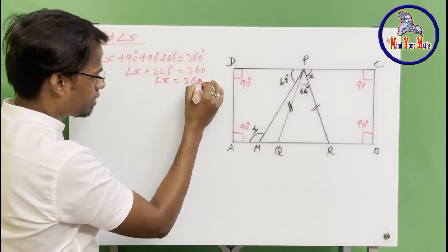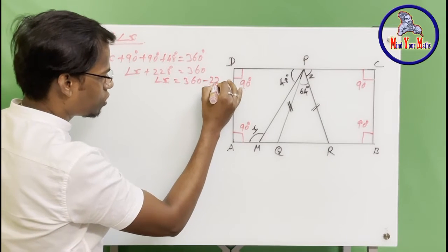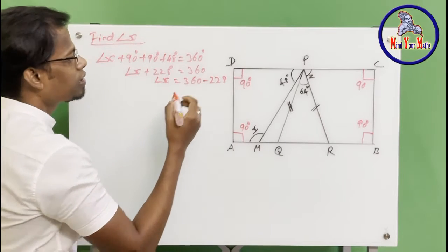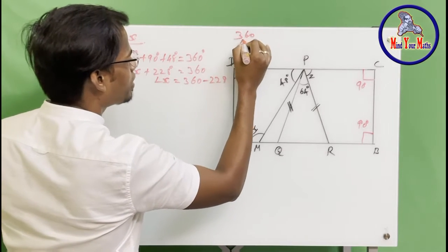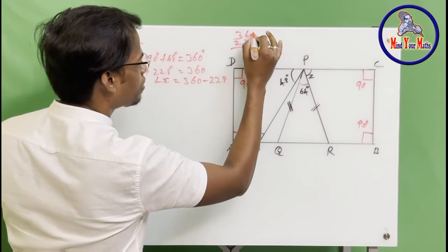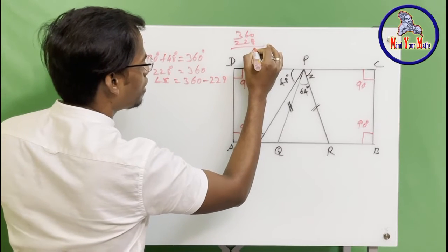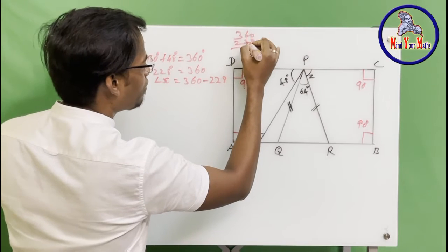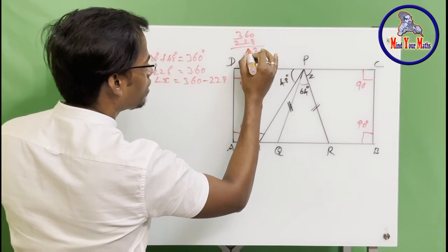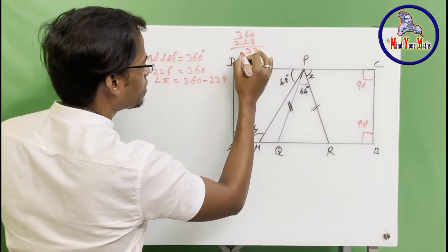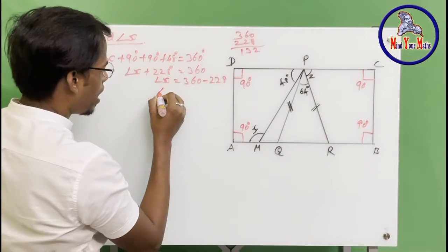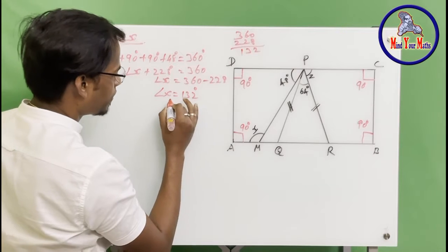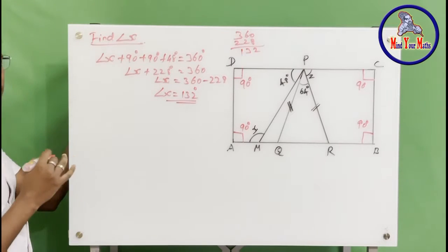Angle x equals 360 minus 228. So 10 minus 8 is 2, 5 minus 2 is 3, 3 minus 2 is 1 — which gives us 132. So angle x is 132 degrees. We found the answer to the first question.